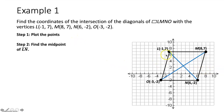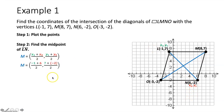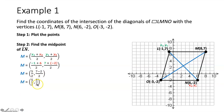First we find the midpoint of segment LN using the midpoint formula. We assign one point as (x₁, y₁) and the other as (x₂, y₂), plug in the coordinates, and simplify. Negative 1 plus 6 is 5, and 7 plus negative 2 is 5. So we get (5/2, 5/2), which we can write as (2.5, 2.5).